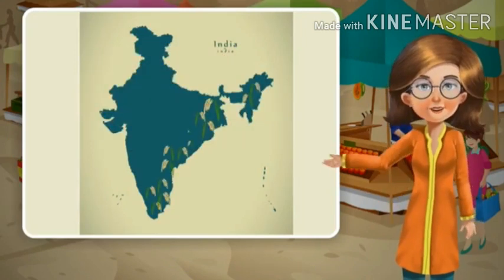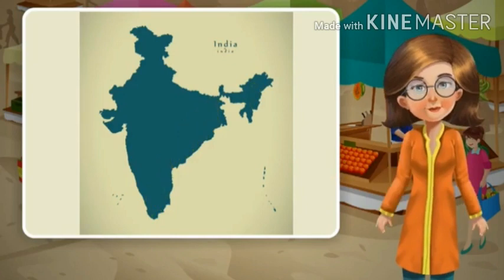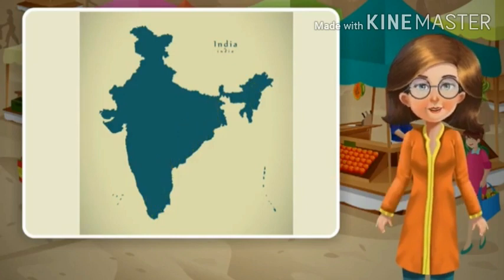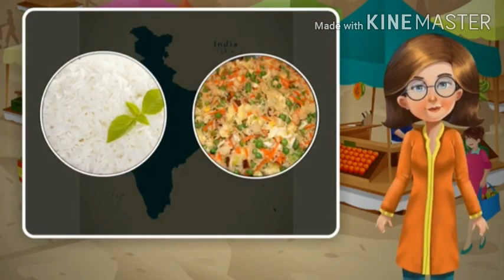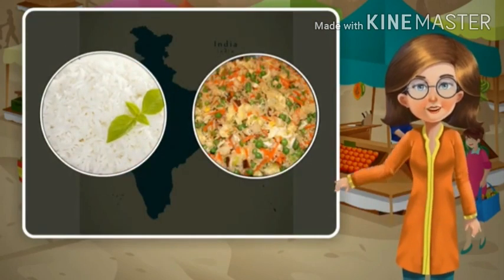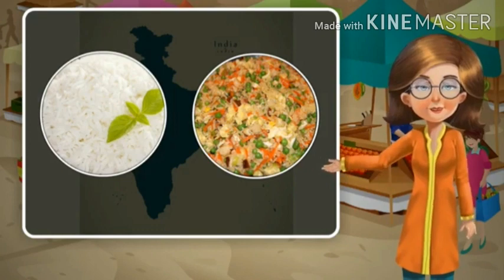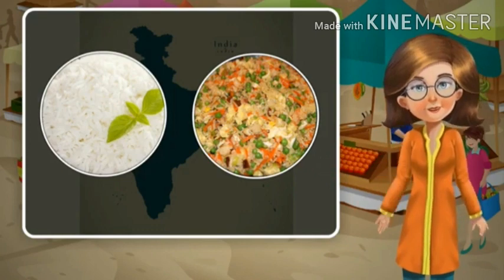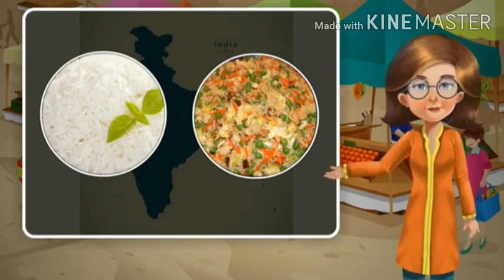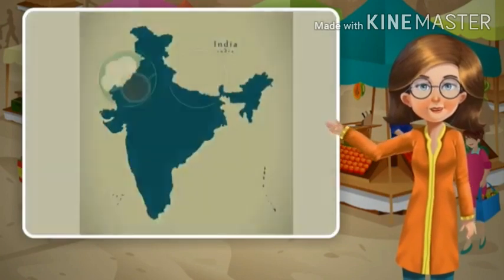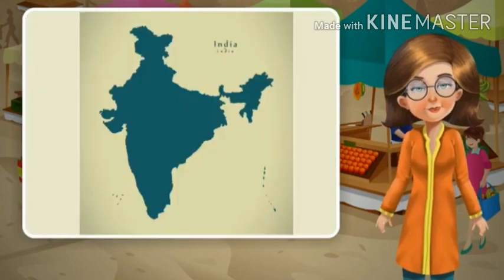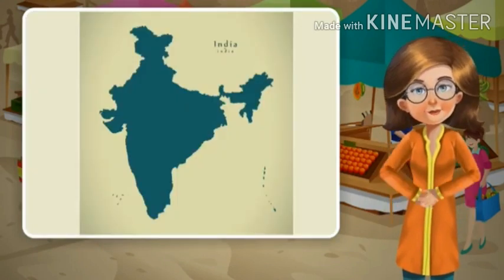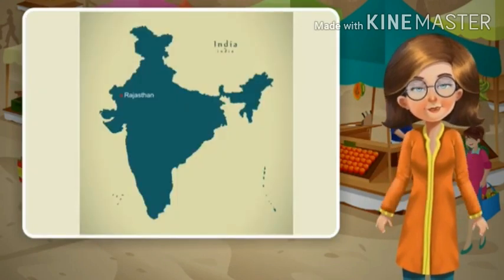Rice is grown and consumed mostly in eastern and southern India. People either fry or boil it in the eastern regions. In south India, people make a number of dishes such as idli and dosa from rice.